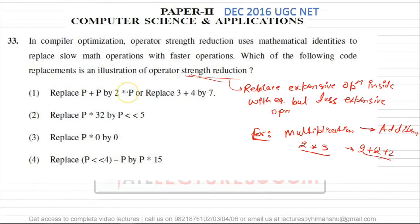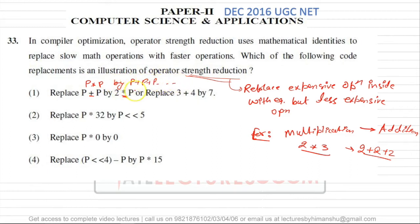The first option says: replace p+p by 2×p, or replace 3+4 by 7. This is false. The plus operation is less expensive than the multiplication operation. The reverse can be done — you can replace p×p by p+p+p and so on. But replacing addition with multiplication cannot be done because plus is already less expensive than multiplication. So this is wrong.